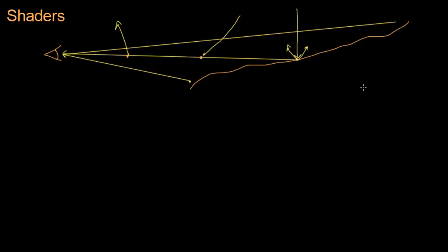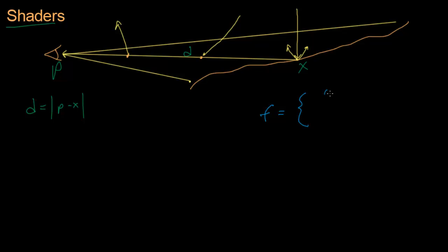We're going to do all of this with shaders. Let's assign some variables. P is the position of the camera or the eye in the scene, and X is the position of the thing that we're rendering. The distance D is going to be the length of P minus X — that's the distance from the eye to the thing we're rendering. The bigger D is, the more fog there will be for that pixel. We want to make a variable F that is 0 if we want no fog, or 1 if we want total fog, and somewhere in between for partial fog.